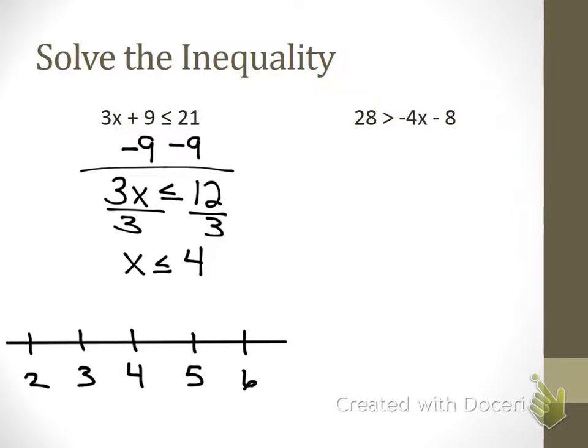Close. What tells me if it's an open or close dot? Equal to. If it's equal to. If it's equal to, that line underneath. That means that it's a closed dot. It can be that number. That number can be a part of the solution. Now how do I know if my arrow goes right or left? If it's less than or greater than. Okay. So we read our variable first. X is less than or equal to four. Arrow goes left. All right.